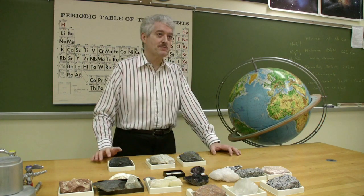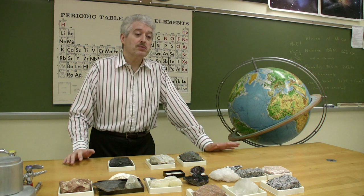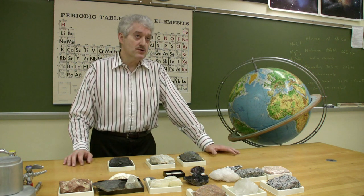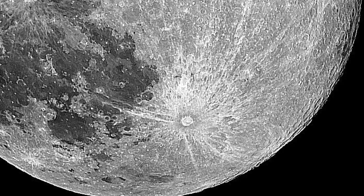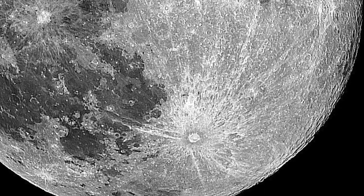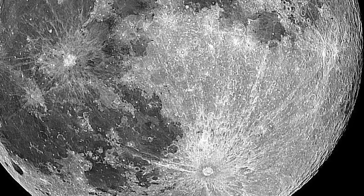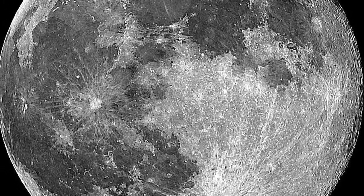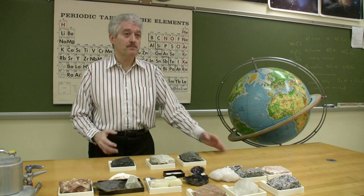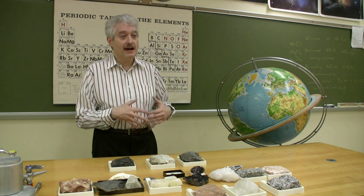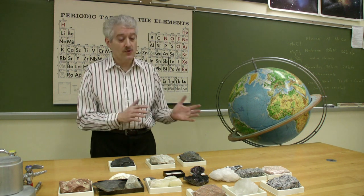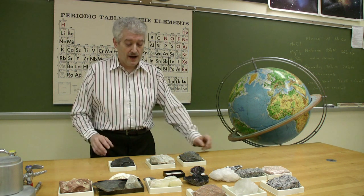Another place that you can see basalt is a place that might be a little surprising to you. If you look at the Moon through binoculars and see the dark areas on the Moon — the regions that make the face of the so-called man on the Moon — you're looking at basalt lava flows that occurred on the Moon, which brings up the point that other planets have somewhat the same rocks and minerals as the Earth does, although they're not all identical.